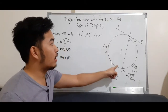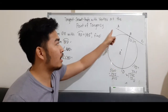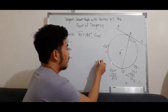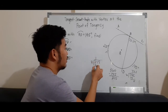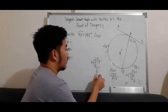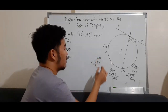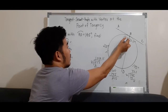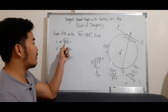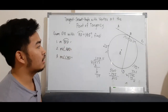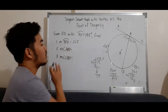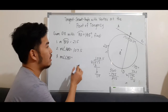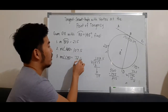Arc BFD is the intercepted arc of angle ABD, which means angle ABD is half of 215 degrees. So 215 divided by 2 is 107.5 degrees. Therefore, arc BFD is 215 degrees, the measure of angle ABD is 107.5 degrees, and the measure of angle CBD is 72.5 degrees.